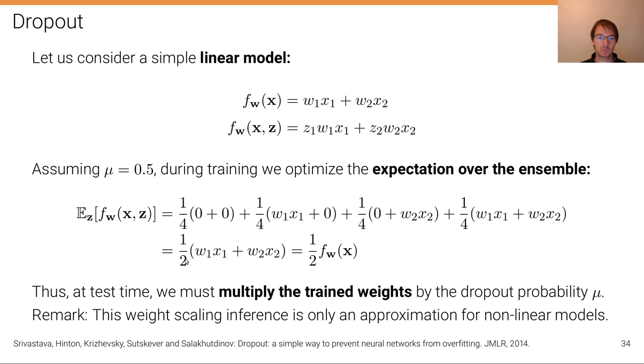Now we sum them all up multiplied with the probability of occurrence which is 1 over 4 because we have 4 different events. And if we sum all of these up we obtain 1 over 2, because we have w₁x₁ both here and here and w₂x₂ both here and here. So we have 1 over 2 times w₁x₁ plus w₂x₂, which is 1 half of the original f_w(x).